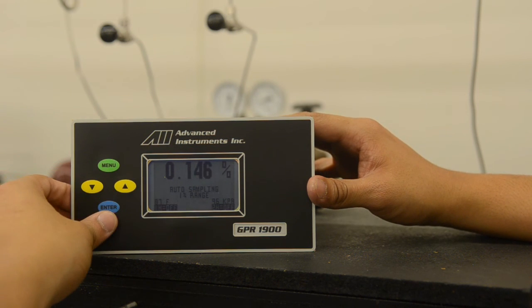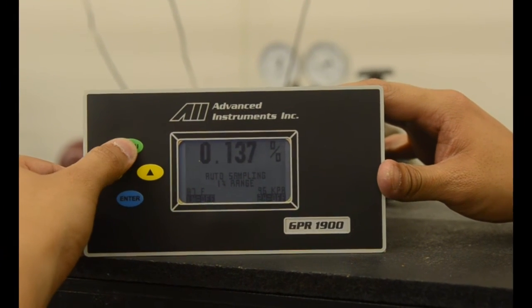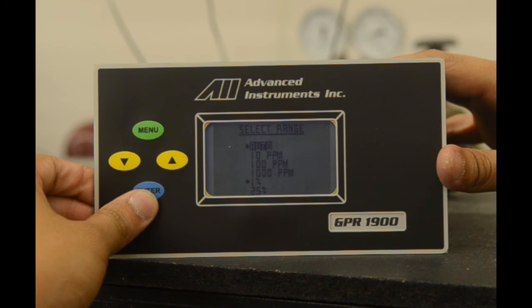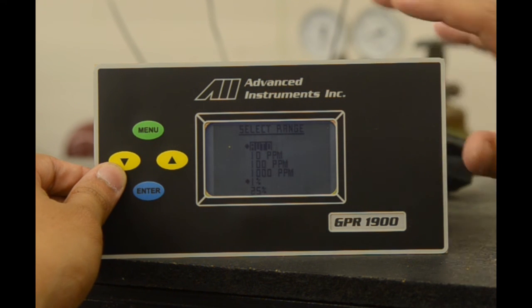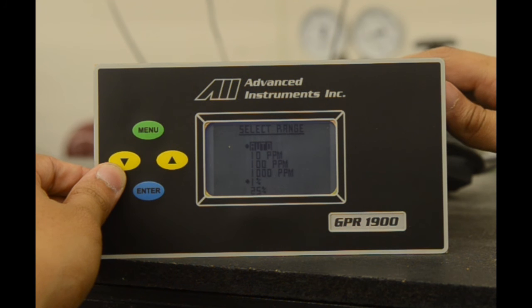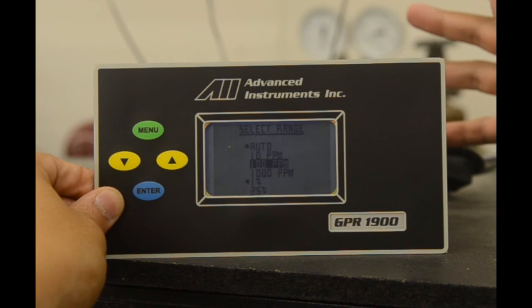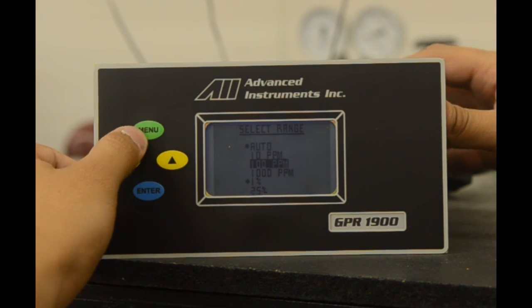We will now go with the select range option. Hit menu, scroll down, select range, and select enter. As you can see, currently it is in auto ranging at one percent. This is indicated by the two dots along auto and the one percent range. We will scroll down and select 100 parts per million, and this will lock the range at 100 parts, manual sampling.